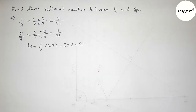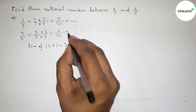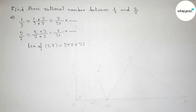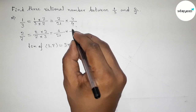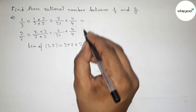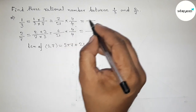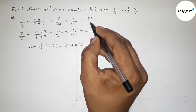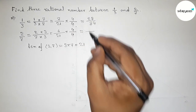Both denominators are now equal at 21. But we still need to find 3 rational numbers between them. So we multiply both fractions top and bottom by 4, in order to create enough space between the numerators for 3 rational numbers.